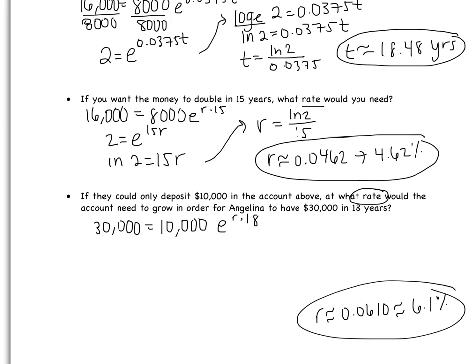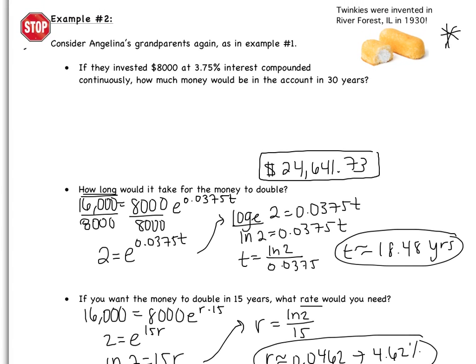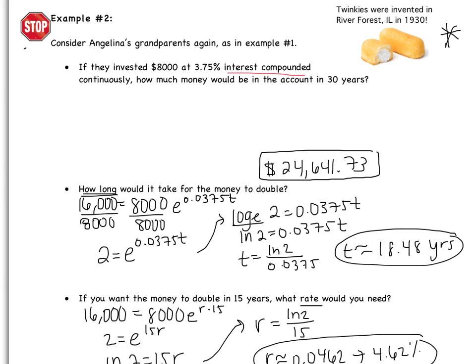One thing to emphasize: what we learned today is for interest compounded continuously. If the problem specifically says 'compounded continuously,' use the formula Y equals P times E to the RT. Tomorrow we'll be doing more word problems with a different formula, so remember: continuously compounded interest uses Y equals PE to the RT. If you have any questions, write them down and bring them to class tomorrow. See you tomorrow.